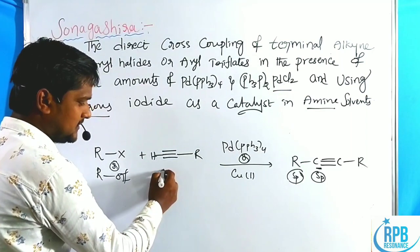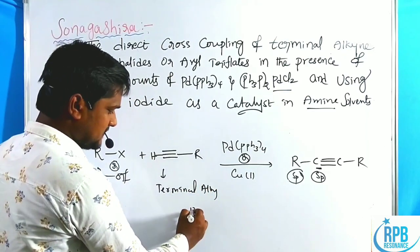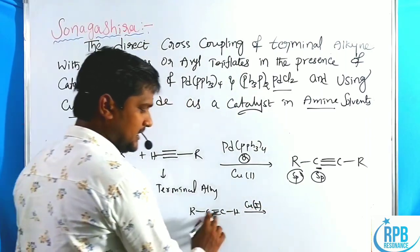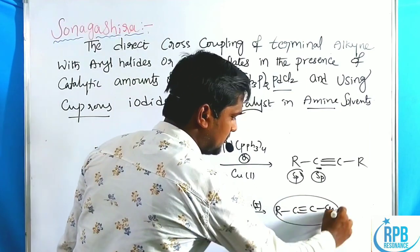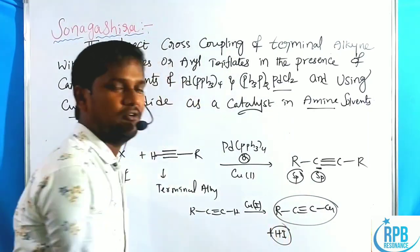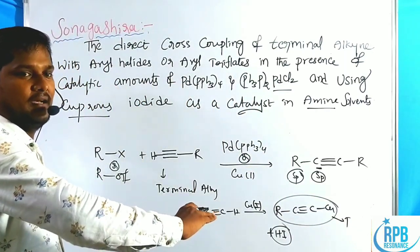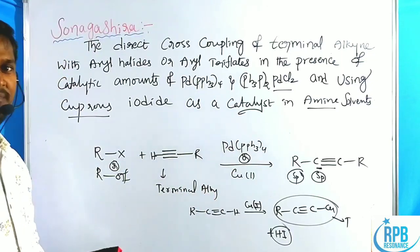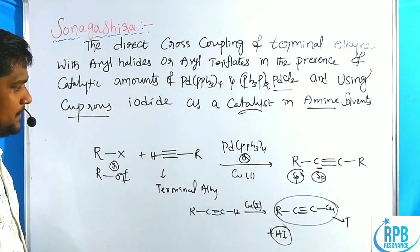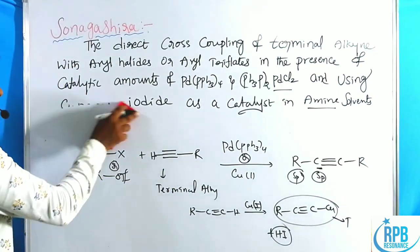The terminal alkyne is treated with copper iodide, which gives a terminal cuprated product. This cuprated product is formed by elimination of hydrogen iodide. These groups are then involved in the transmetallation step, transferring the alkyne group to the palladium catalyst via the catalytic cycle. This is the simplest reaction but it includes several limitations.